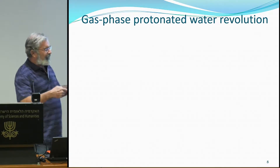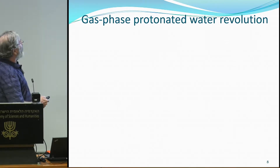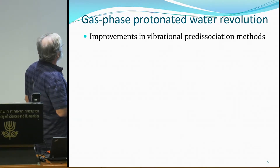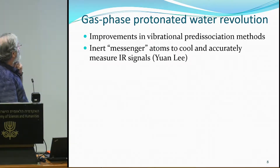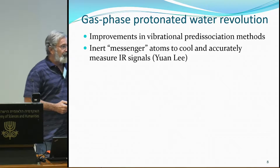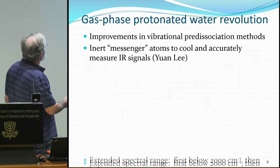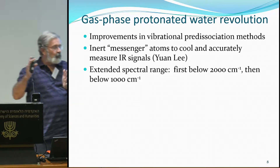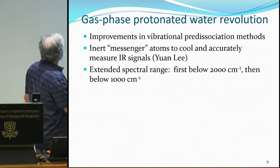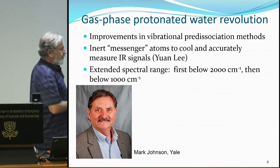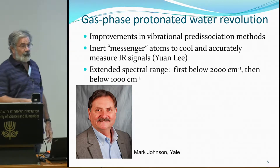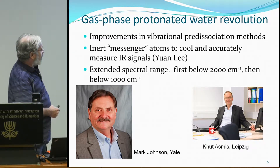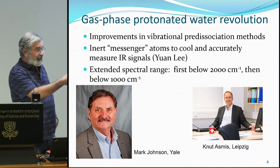This subject has undergone rapid development, almost a revolution, in the last decade or two. There are improvements in vibrational predissociation methods starting from Yuan Lee who introduced the messenger method, and technical improvements like the valve of Uzi Even which everybody uses now. There is also an extended spectral range — first only the OH stretches on the blue side, then it became possible to go below 2000 wavenumbers through work from Mark Johnson's group at Yale, and more recently the free electron laser in Germany allowed the Knut Asmis group to go below 1000 wavenumbers.